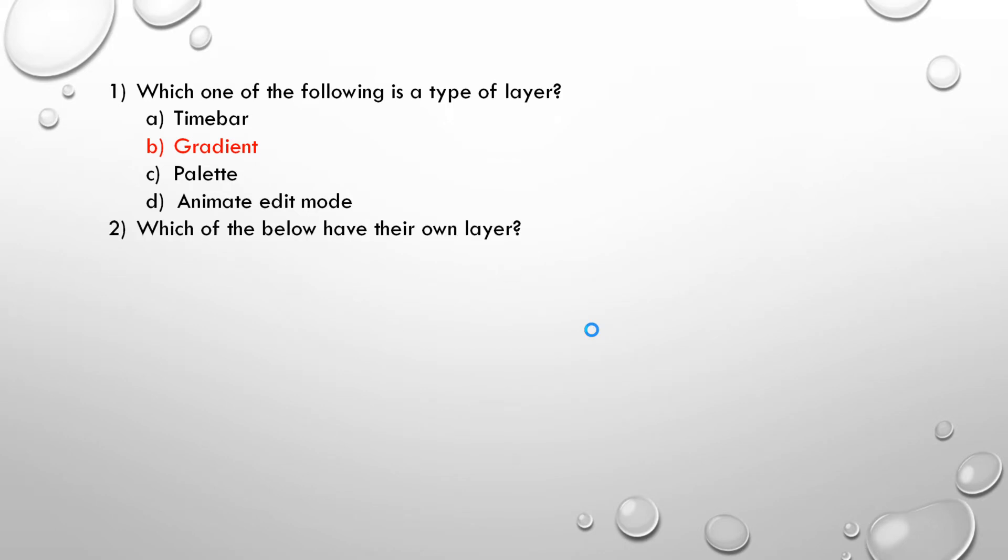Second question, which of the below have their own layer? A. Object, Element, Effect. B. Parameter, Object, Panel. C. Time, Parameter, Layer. D. Effect, Object, Panel. Correct answer is A. Object, Element, Effect.